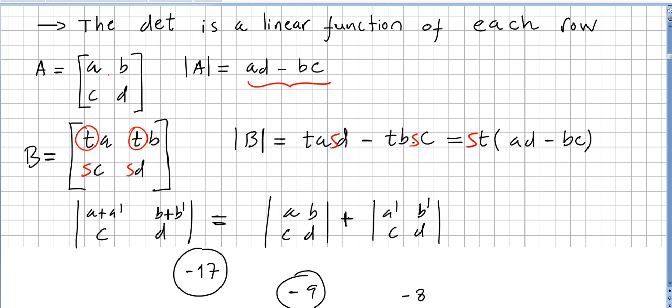We saw that for the multiplication determinant: if you multiply one line, one row by a scalar, the determinant is multiplied by that scalar. And the same goes for addition: if you add one row, the determinant will be the same.